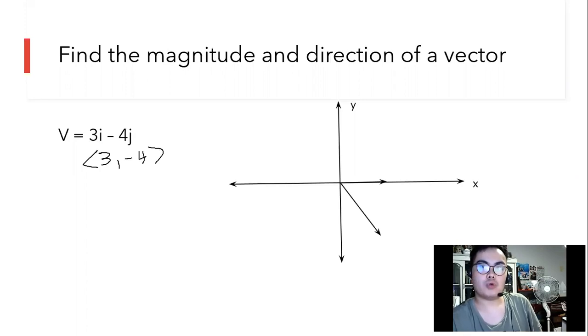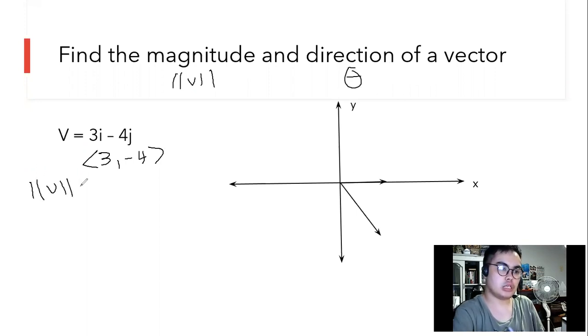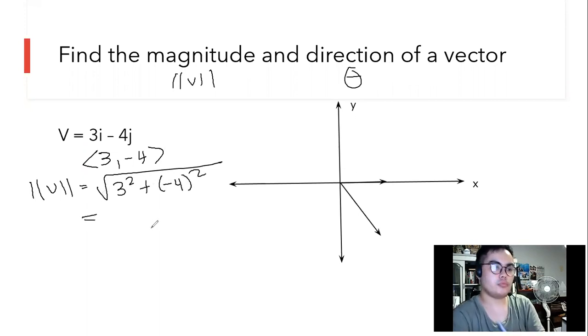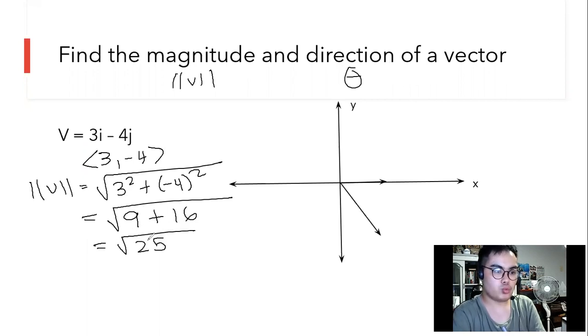What we're going to do is the same way. This is the magnitude, then this is the direction. For the magnitude, we apply the concept of Pythagorean theorem. What is 3 squared? 9. What is negative 4 squared? It shall be 16. We add what's inside the square root. What is the square root of 25? It shall be 5.